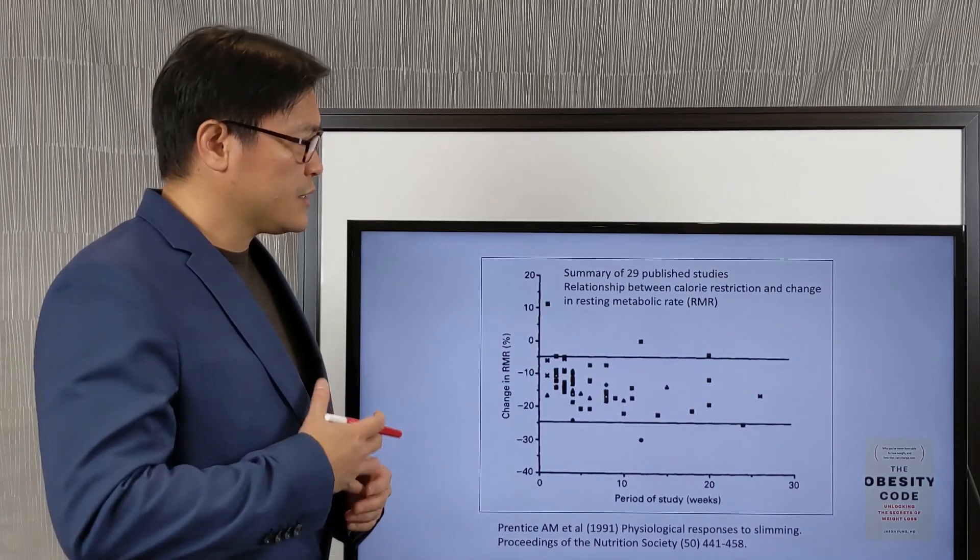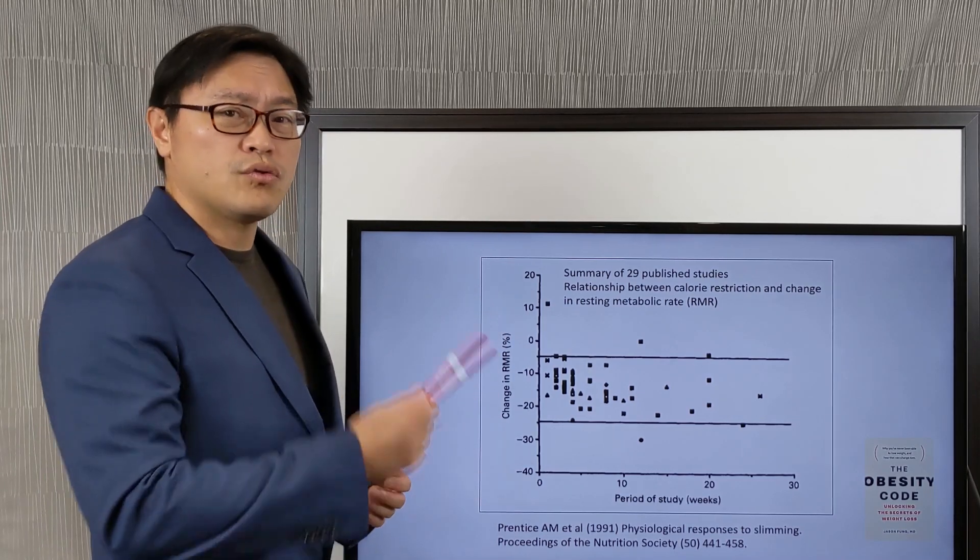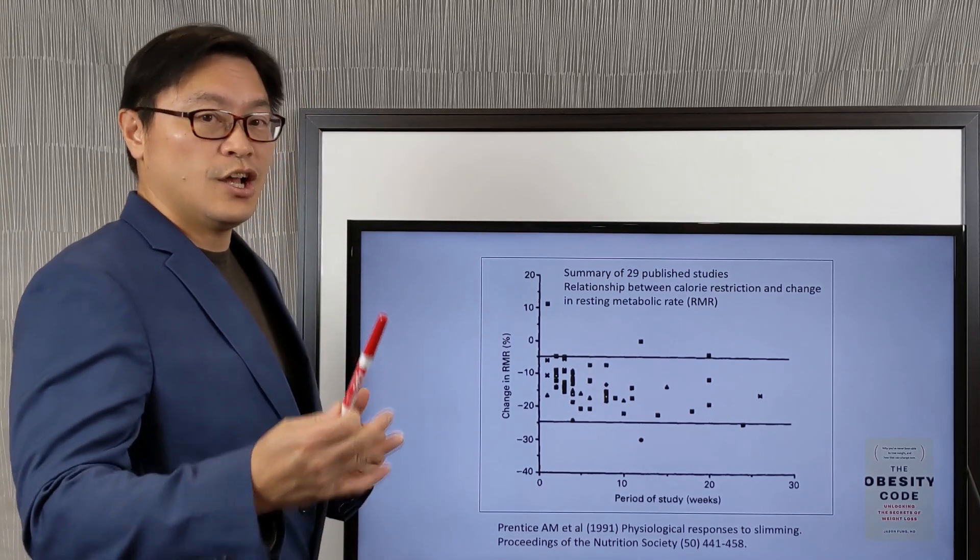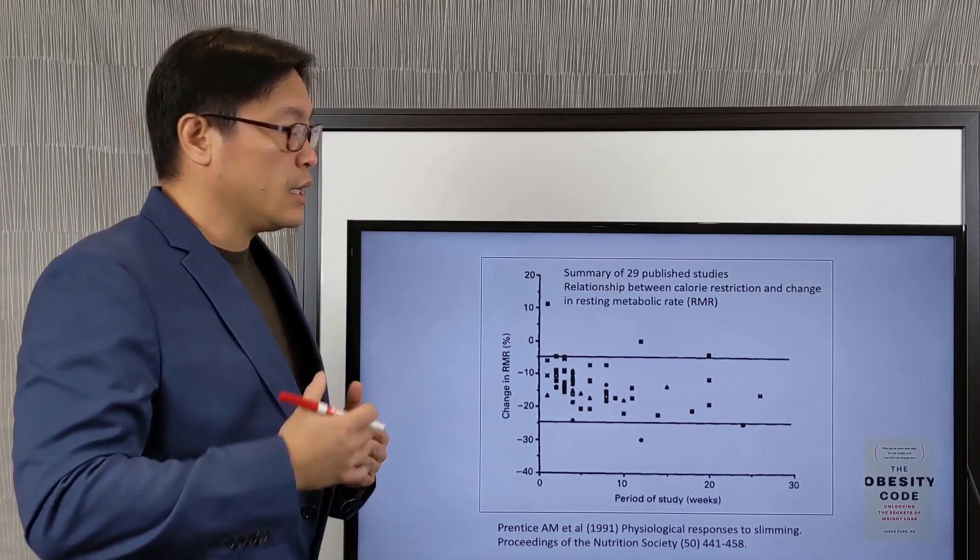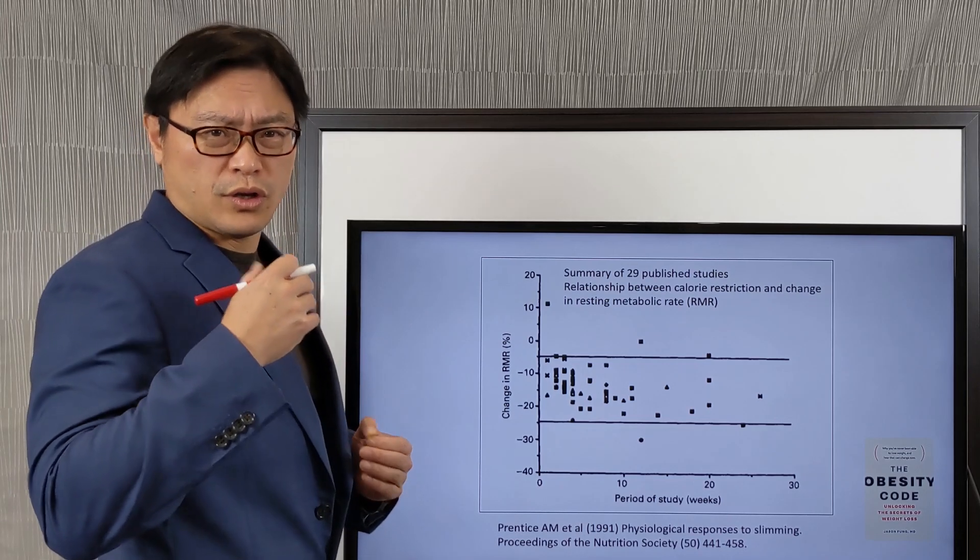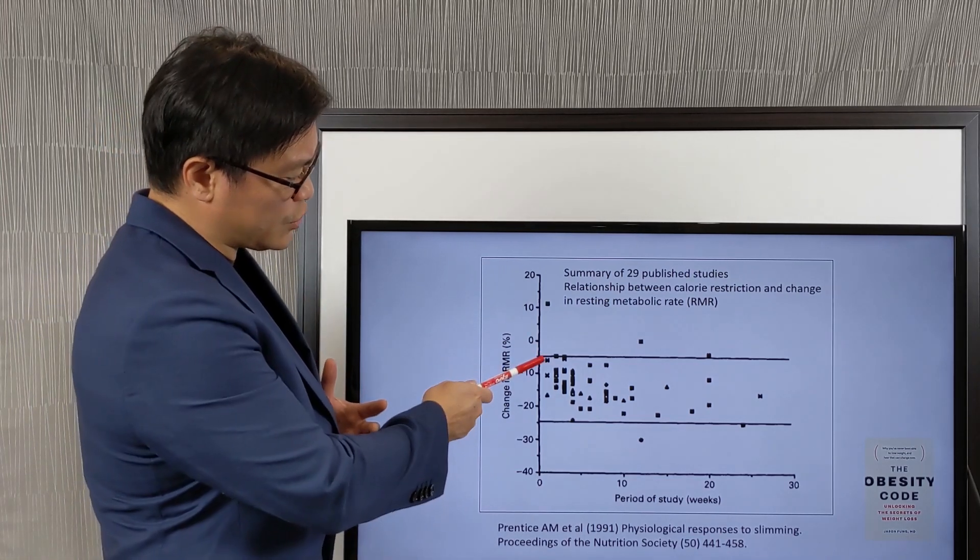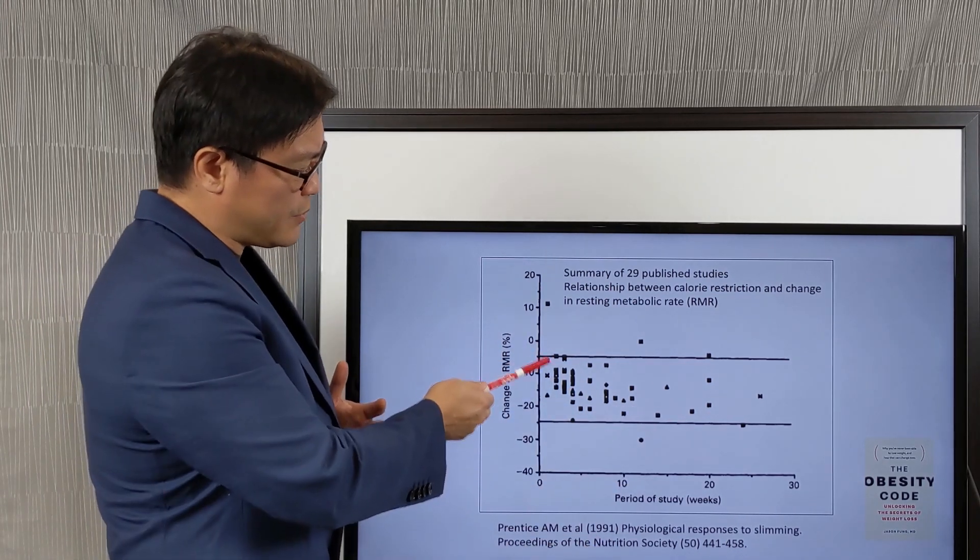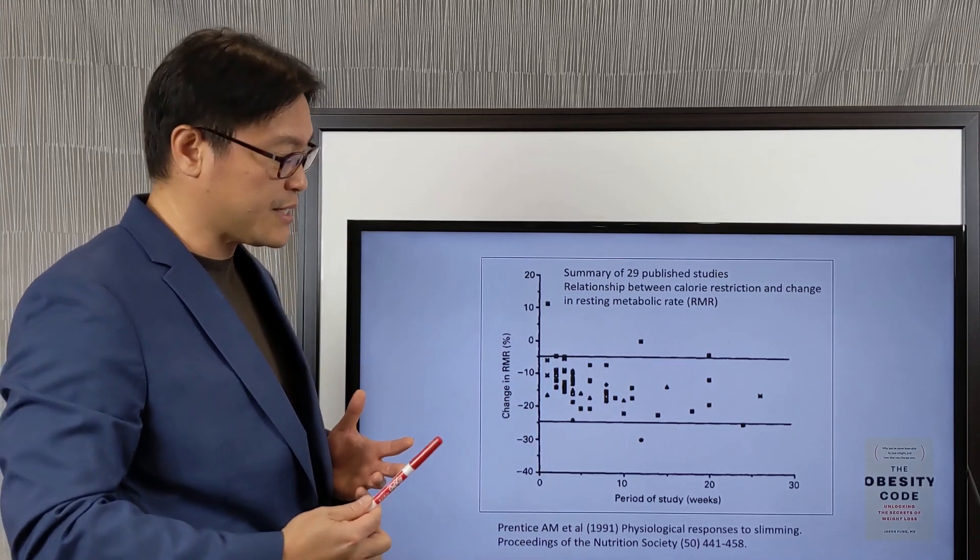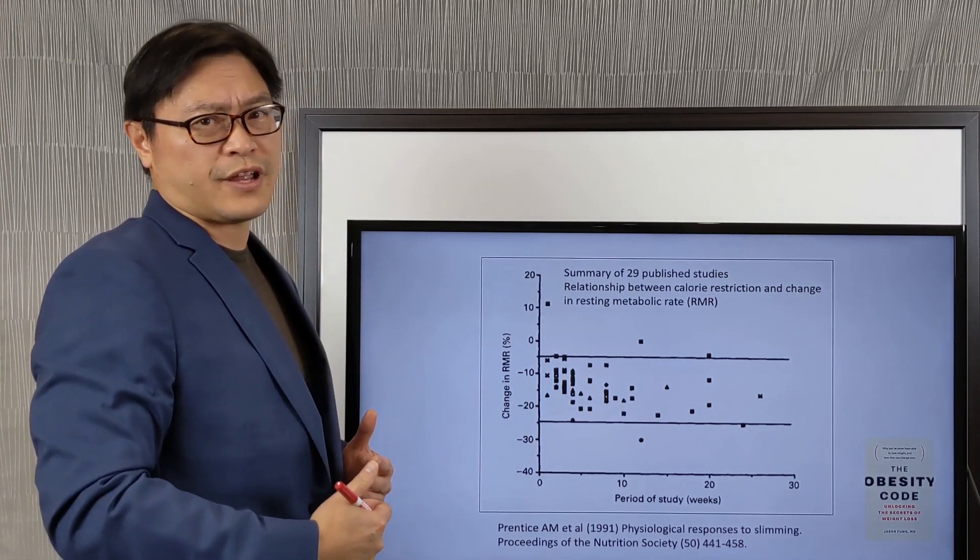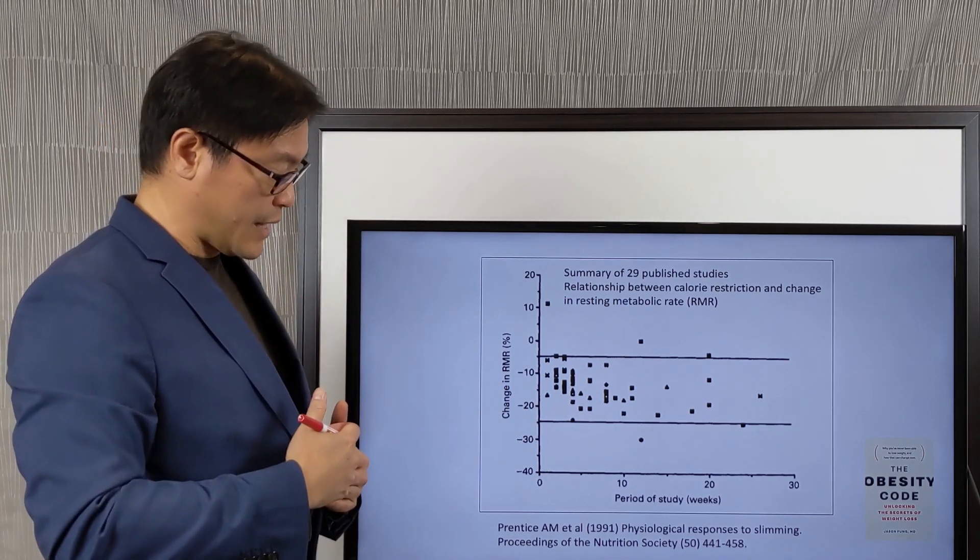So in fact, there's been many, many studies like this over the last 50 years. This is a summary of 29 different published studies looking at the relationship between calorie restriction and the change in your resting metabolic rate, which is the number of calories that you're going to need in a day. And again, what you can see is that of these 29 studies, the great majority shows around 15 to 20, 25 percent reduction in the number of calories that you're actually going to use, just due to the restriction in calories.